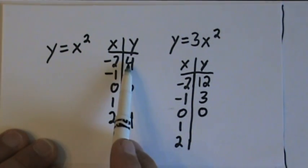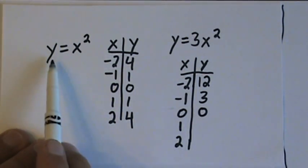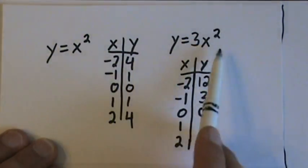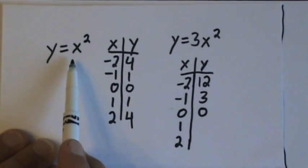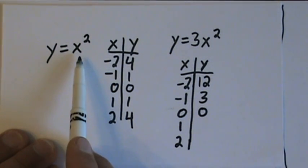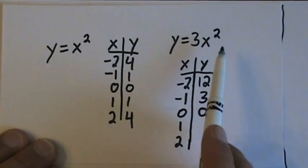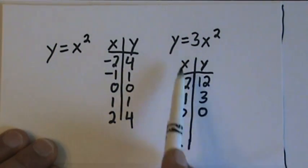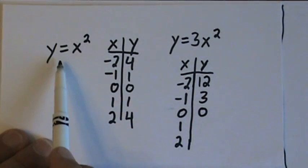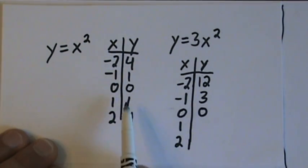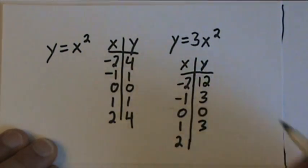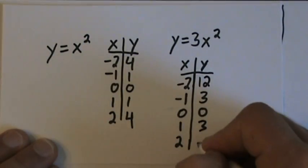Notice that every value of y here is tripled to get our new value. And that makes sense. The only difference between these two functions is that this function has an x squared coefficient of 1. This function has an x squared coefficient of 3. So whatever we get here, we're tripling over here. So 1 tripled is 3, 4 tripled is 12.